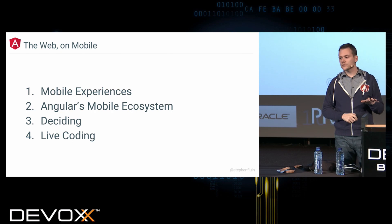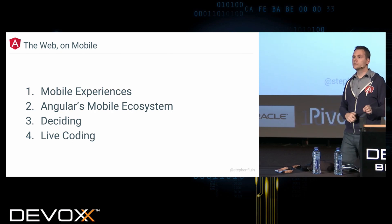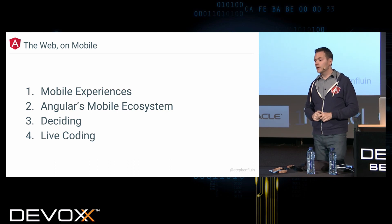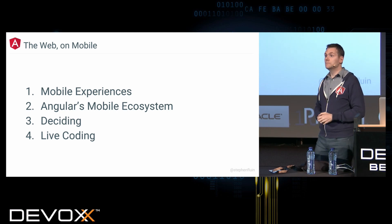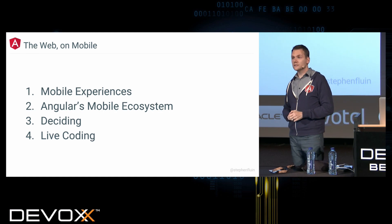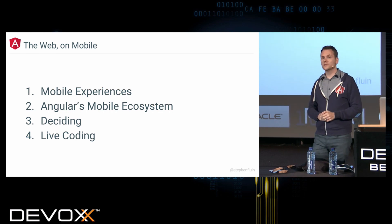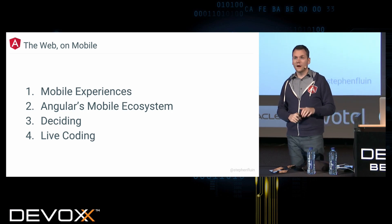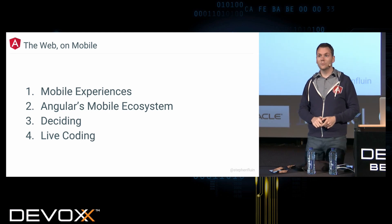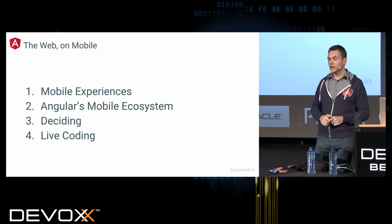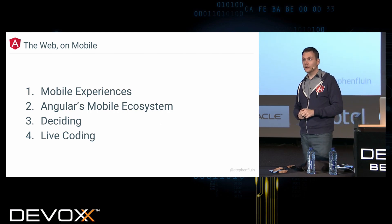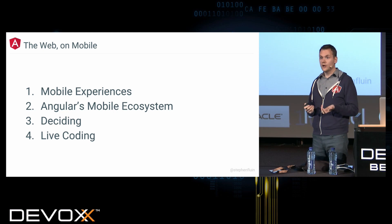This talk is roughly going to have four sections. First, I'll talk about the importance of mobile experiences in terms of how you connect to your users. Second, I'll talk about Angular's mobile ecosystem — all the different tools at your disposal for building great experiences. Then I'll give some guidance on a framework for deciding what to do when building and shipping on mobile. And then we're going to try some live coding and actually build and launch an application on mobile.